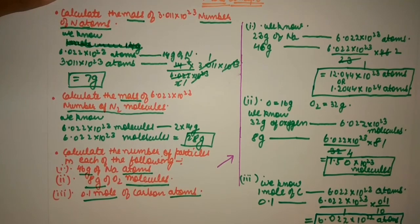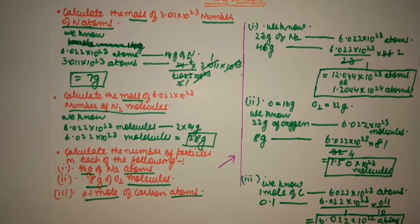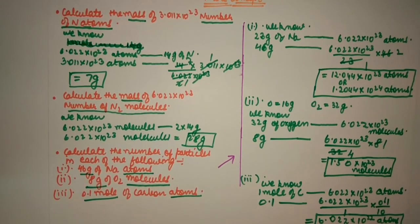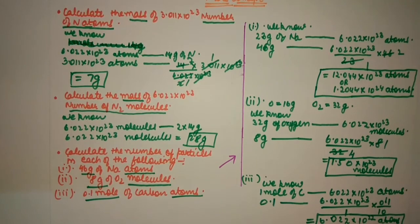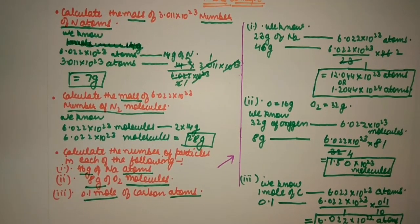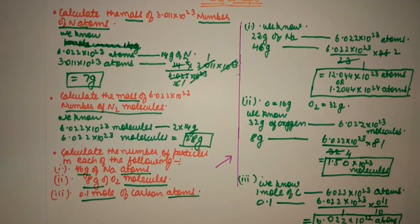That's it. This is the most easiest way to solve any question of mole concept. You need to remember just one line: one mole is equal to Avogadro's number of particles — particles can be atoms, molecules, ions, anything — is equal to molecular mass of the substance, is equal to 22.4 liters at STP. Thank you.